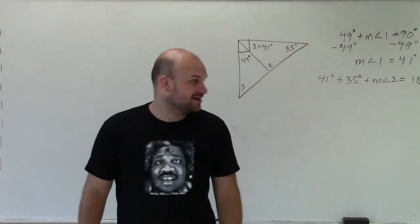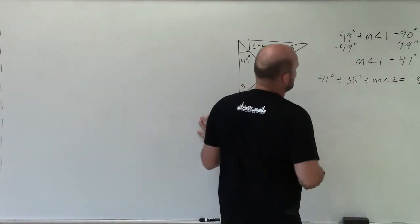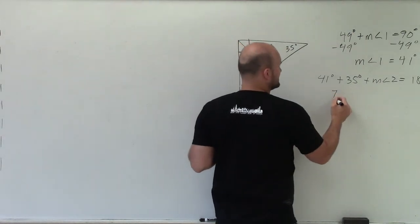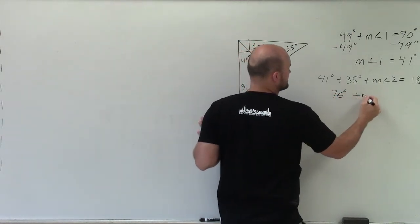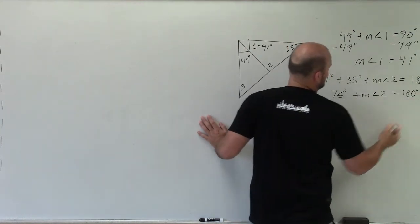So now to go ahead and solve for measure of angle 2, I can combine my like terms. So 35 plus 41 is going to be 76 degrees plus the measure of angle 2 equals 180 degrees.